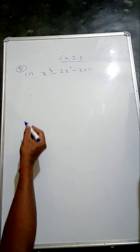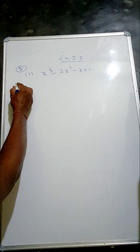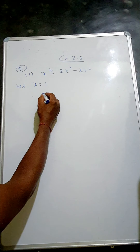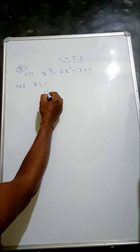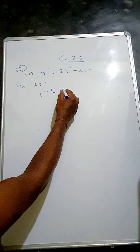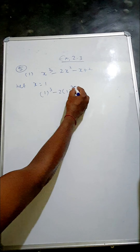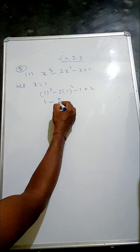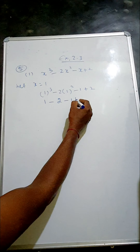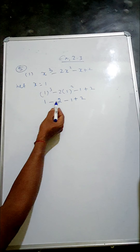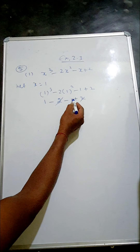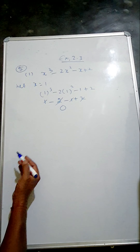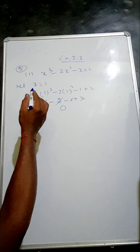First, we'll apply x equal to 1. So instead of x we'll apply 1: 1 cubed minus 2 into 1 squared minus 1 plus 2. So 1 cubed is 1, 2 into 1 is 2, minus 1 plus 2. Minus 2 plus 2 cancel, minus 1 plus 1 cancel, so the answer is 0. The remainder is 0, which means it is a factor.